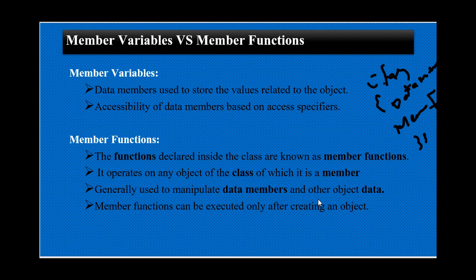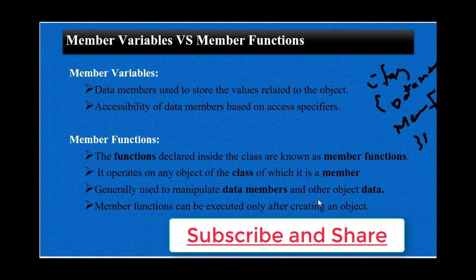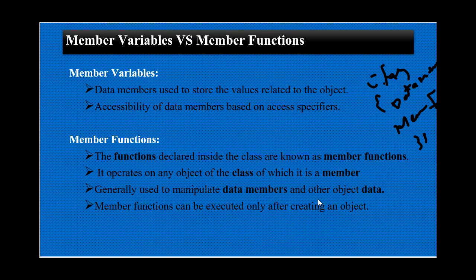Objects की value को store करने के लिए हम data member को use करते हैं। The accessibility of the data member is based on access specifiers. Data members को access करना है, उसकी accessibility जो होती है वो access specifier के ऊपर depend करती है। Access specifiers ऐसी commands होते हैं जो किसी भी member function या data member के area को define करती हैं।